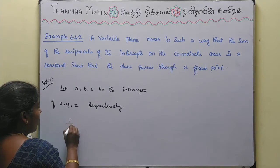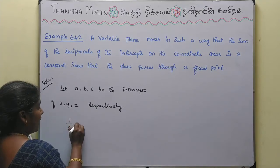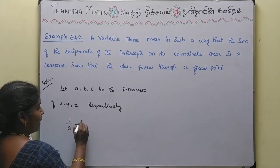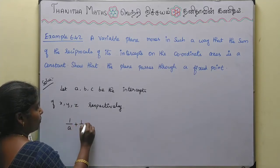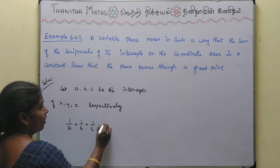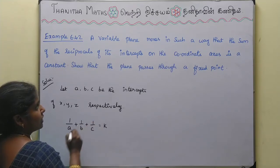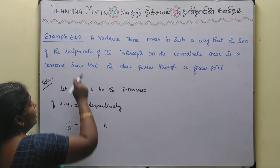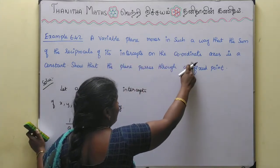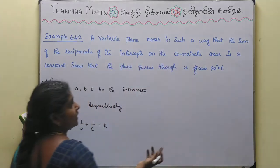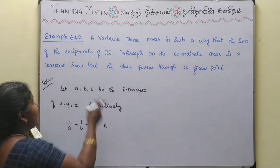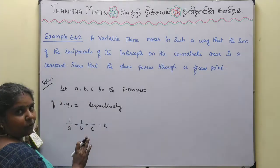Now, the reciprocals of the intercepts are: 1/A, 1/B, and 1/C. Adding all of these gives a constant. So the sum of the reciprocals of the intercepts on the coordinate axes — x-axis, y-axis, z-axis — equals a constant k.